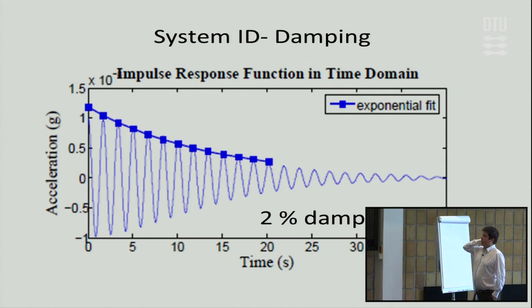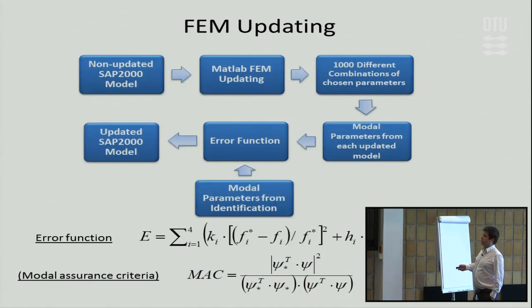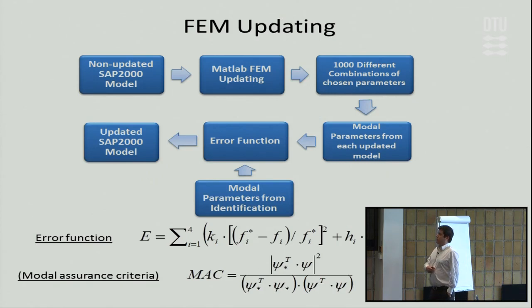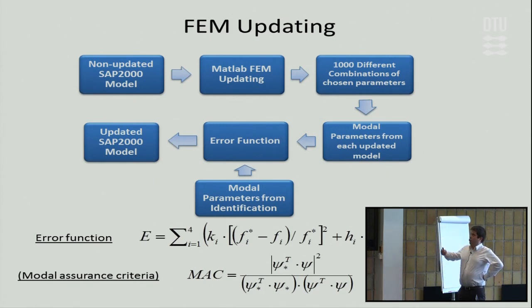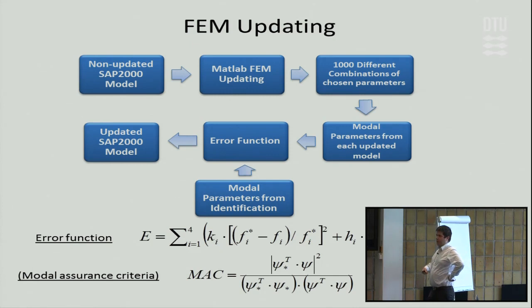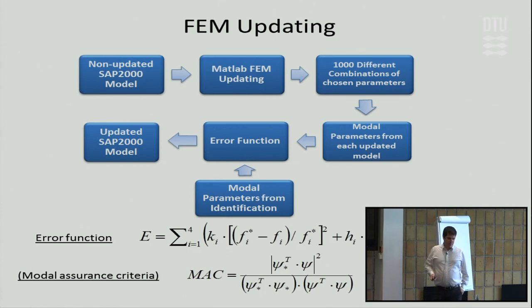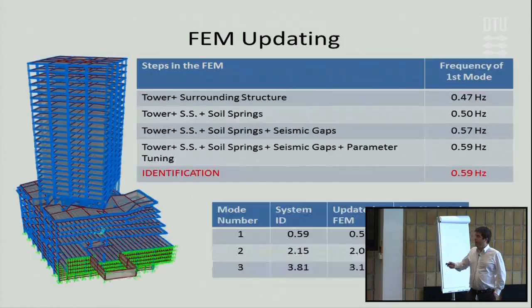We found the viscous damping to be two percent. Then we performed finite element model updating. The main motivation is: what is the reliability during a seismic event for non-updated versus updated models? When I say updated model, I consider both frequency updating and damping updating.